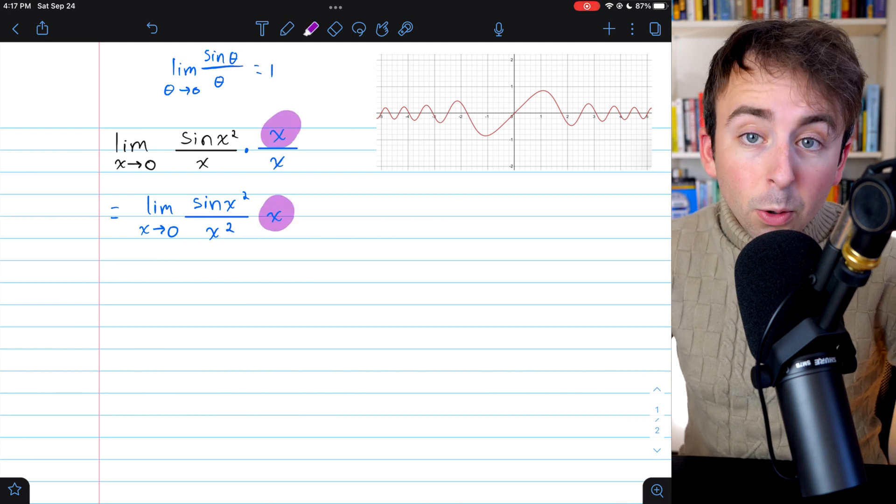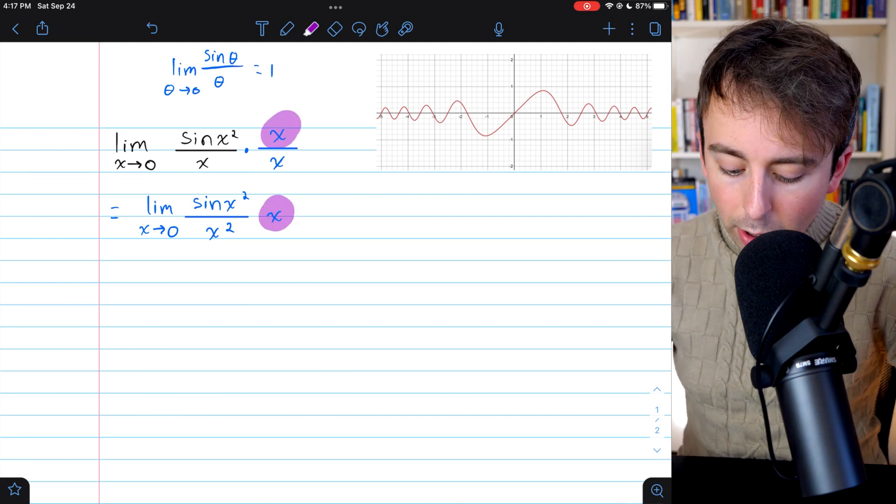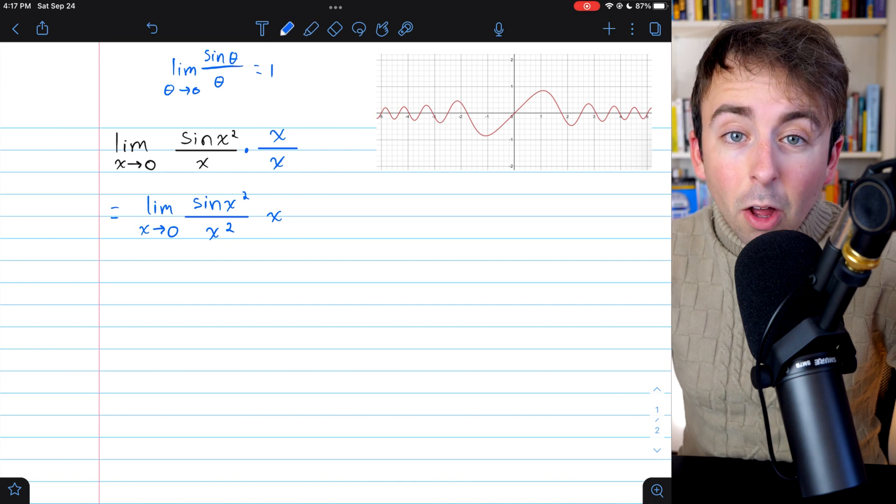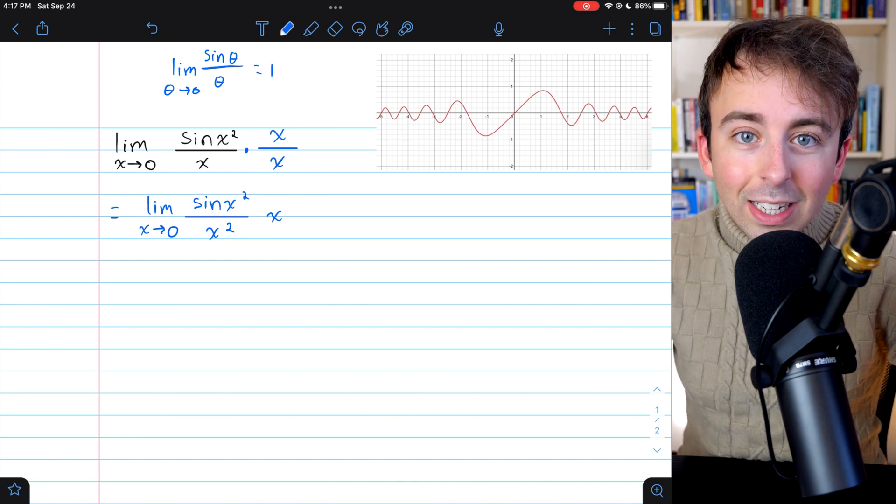So I'm just keeping this x outside of the sine x squared over x squared, because that's going to help me see what I have to do a little more easily.